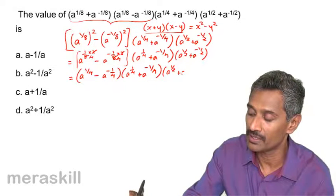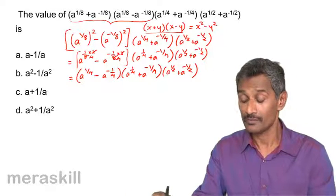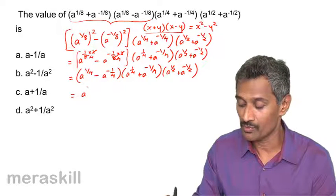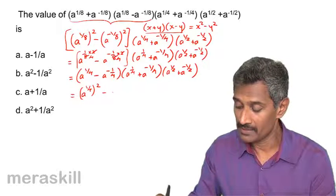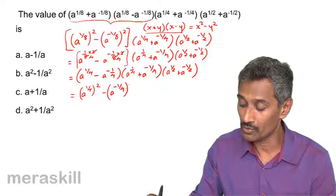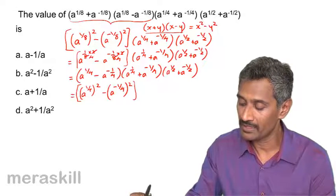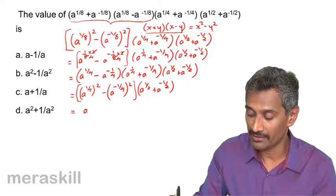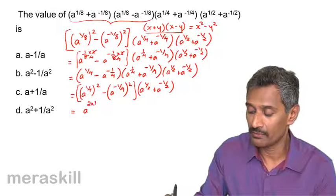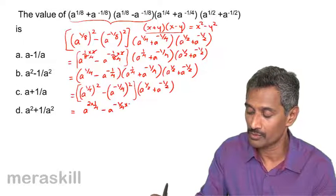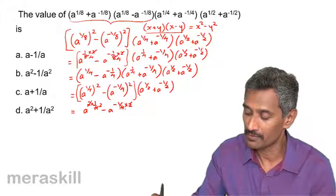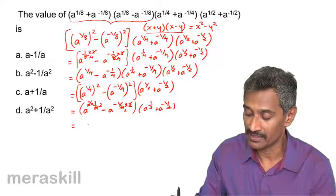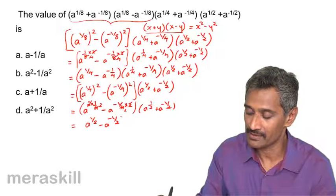Here again we apply x minus y into x plus y, which gives us a raised to 1/4 the whole square minus a raised to minus 1/4 the whole square. These two simplify further, and we're left with a raised to half plus a raised to minus half. Using the power of power rule again, this becomes 1/2, giving us a raised to 1/2 minus a raised to minus 1/2.